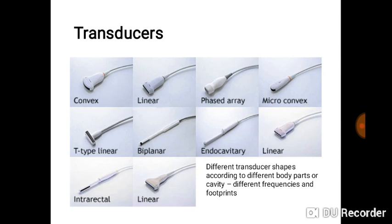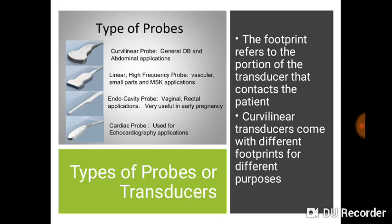There is a range of probes you will encounter in practice. You have the convex/curvilinear, the phased array — more like the linear and convex but with a smaller footprint and smaller surface area — and the microconvex, similar. You also have endocavitary probes for transvaginal, transrectal, and transesophageal use. The footprint of a probe refers to the surface area that makes contact with the patient. Curvilinear transducers come with different footprints for different purposes.